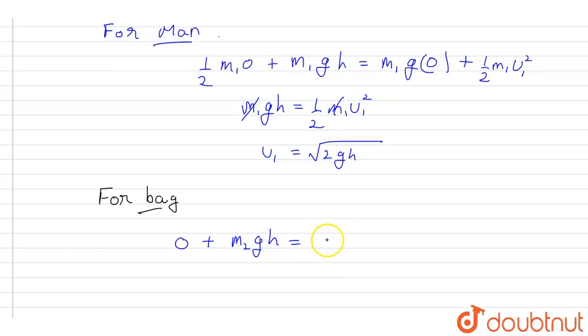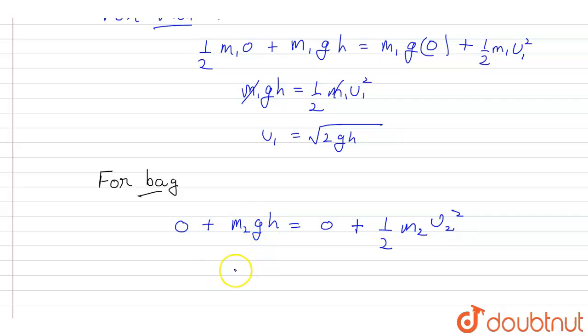So therefore this will be equal to m2 g h is equal to half m2 u2 squared. This will get cancelled, so again from here u2 will be equal to under root of 2 g h.